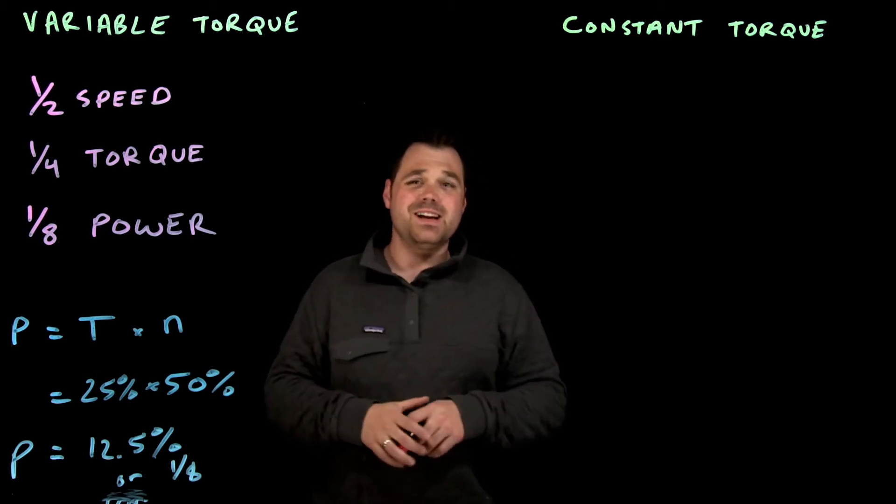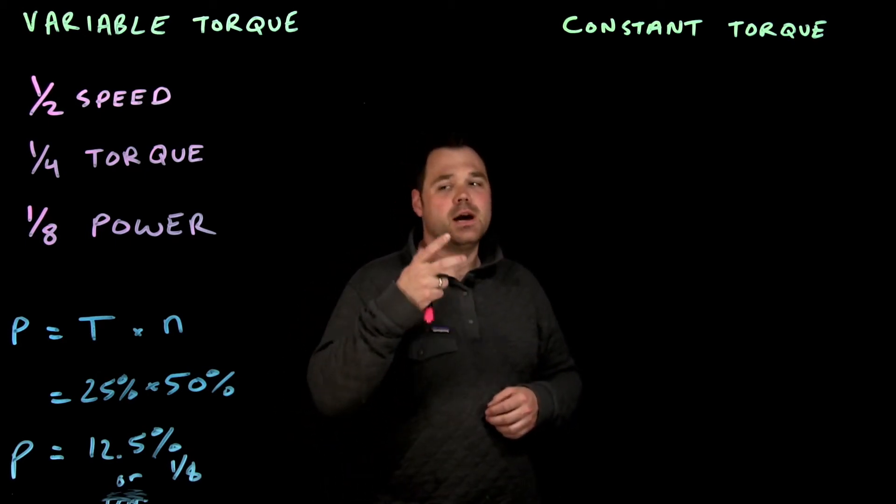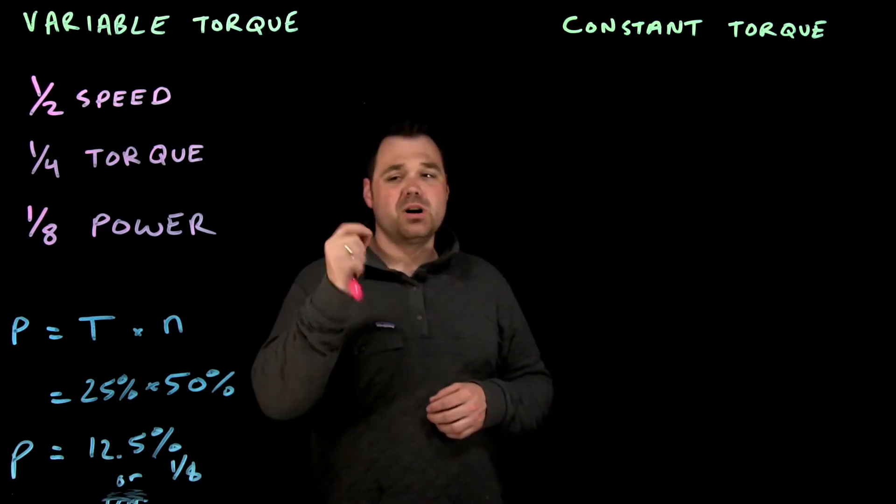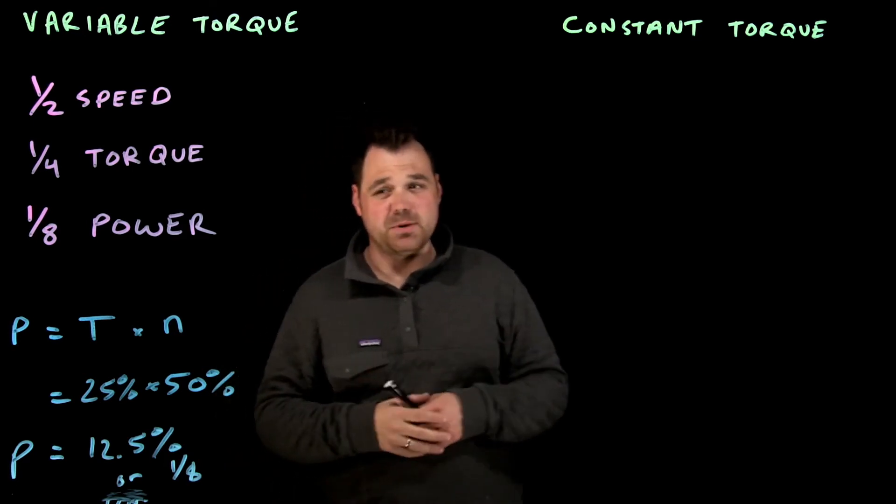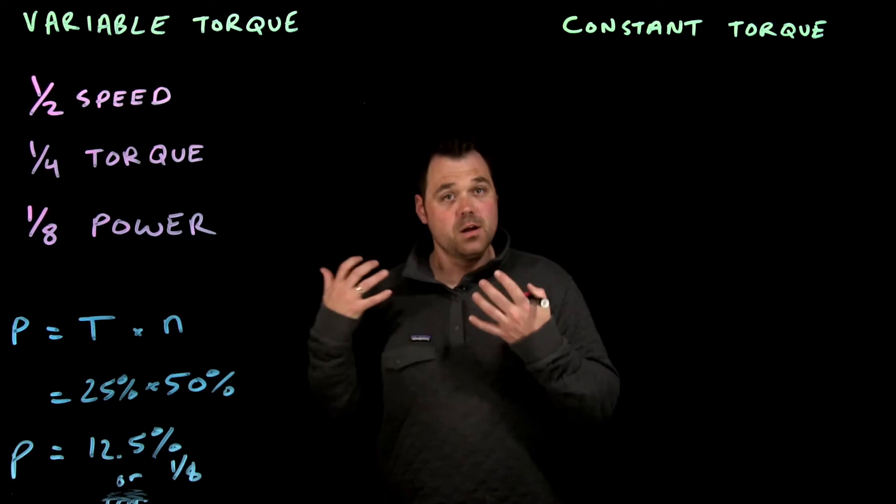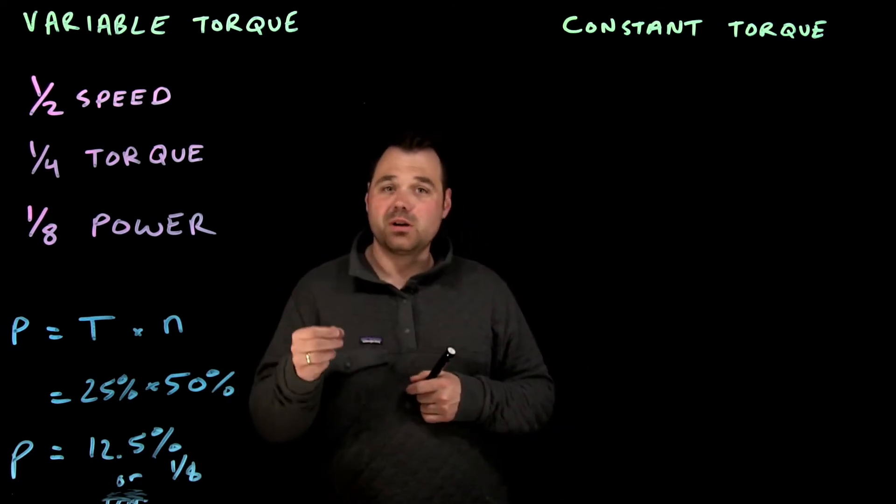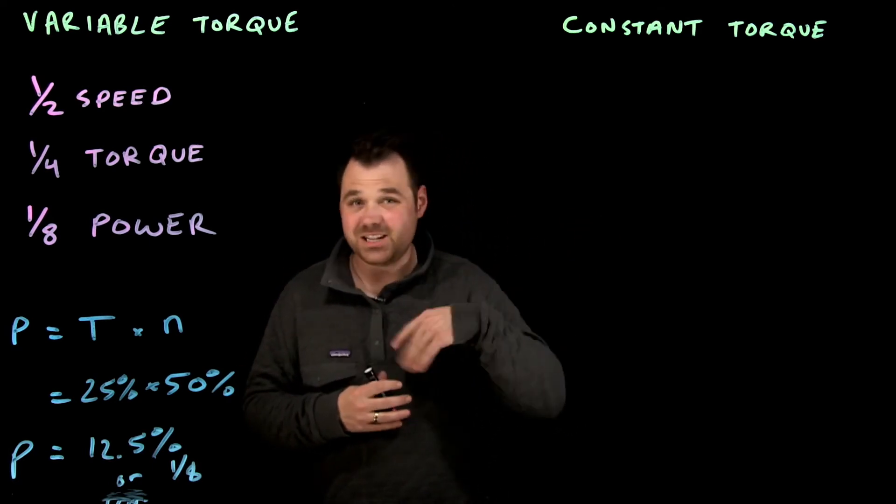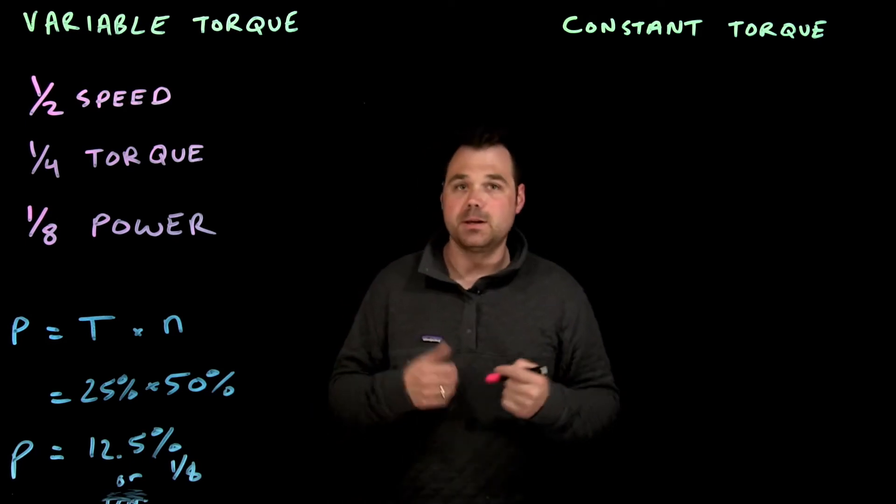Think about things like conveyor belts, compressors, positive displacement pumps or piston pumps, and then or like concrete mixers or things that are mixing. Those items all require full torque, whether you're running at any speed. The torque is constant.